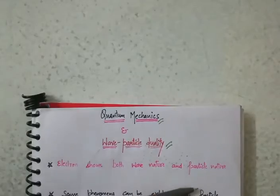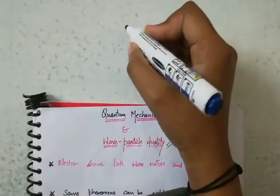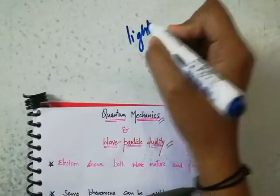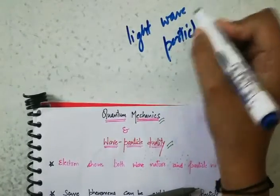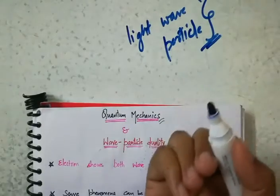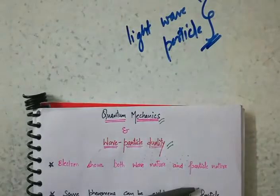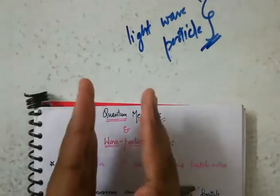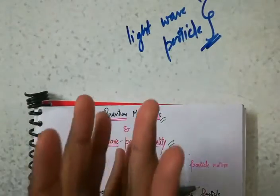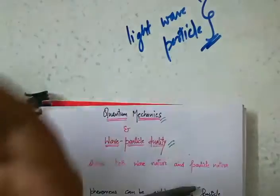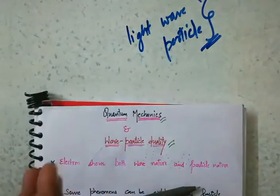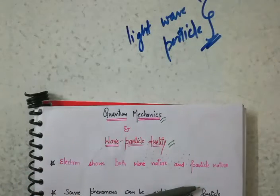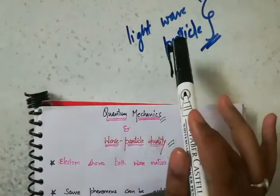The first topic is quantum mechanics and wave-particle duality. This was mainly proposed for light — at the time researchers discovered that light acts both as a wave and as a particle. From that research, we got to know that not just light, but every matter acts like a wave sometimes and like a particle sometimes.